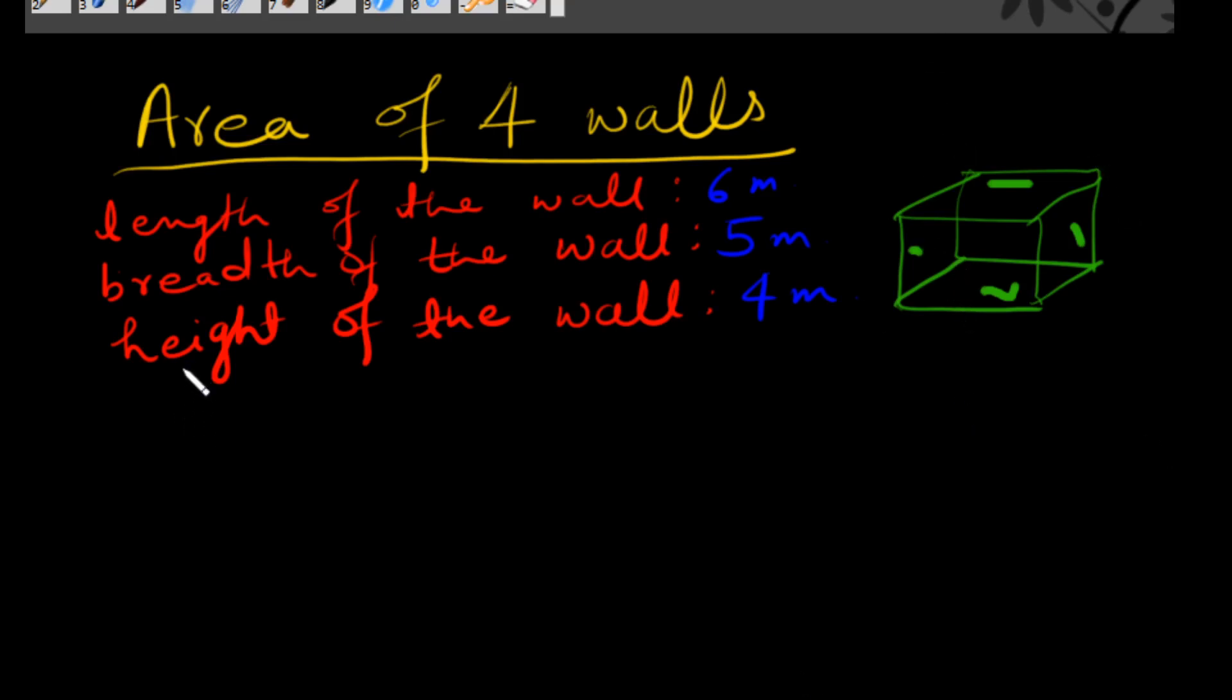So if we need to find the area, area is equal to 2 times length times height, as we have two walls of same length and height, plus 2 times B times H, as we have two walls of same breadth and height.